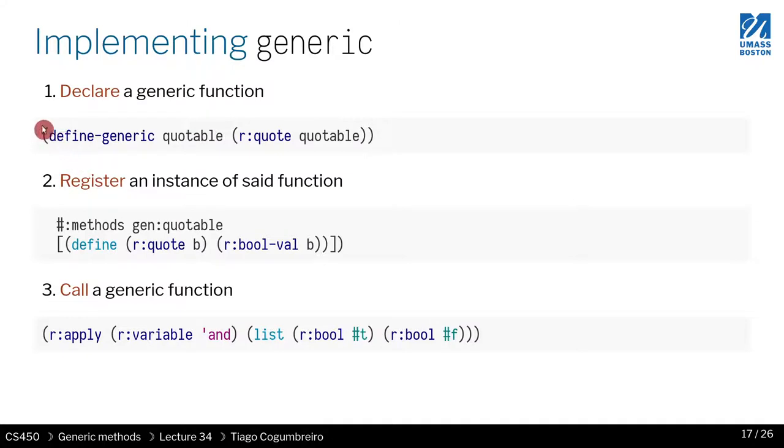Firstly, we learned that there is a way to define a generic method. We gave it a name, and then we defined a method. Somewhere in that method, we defined the parameter that was being dispatched. In this particular case, there's only one argument, so that's the one being dispatched on.